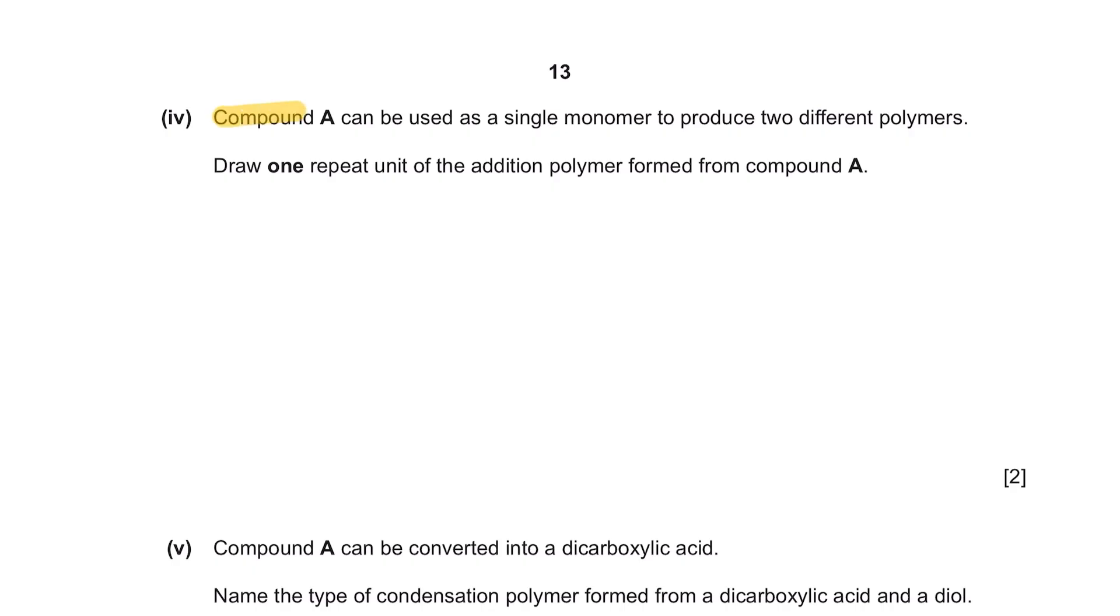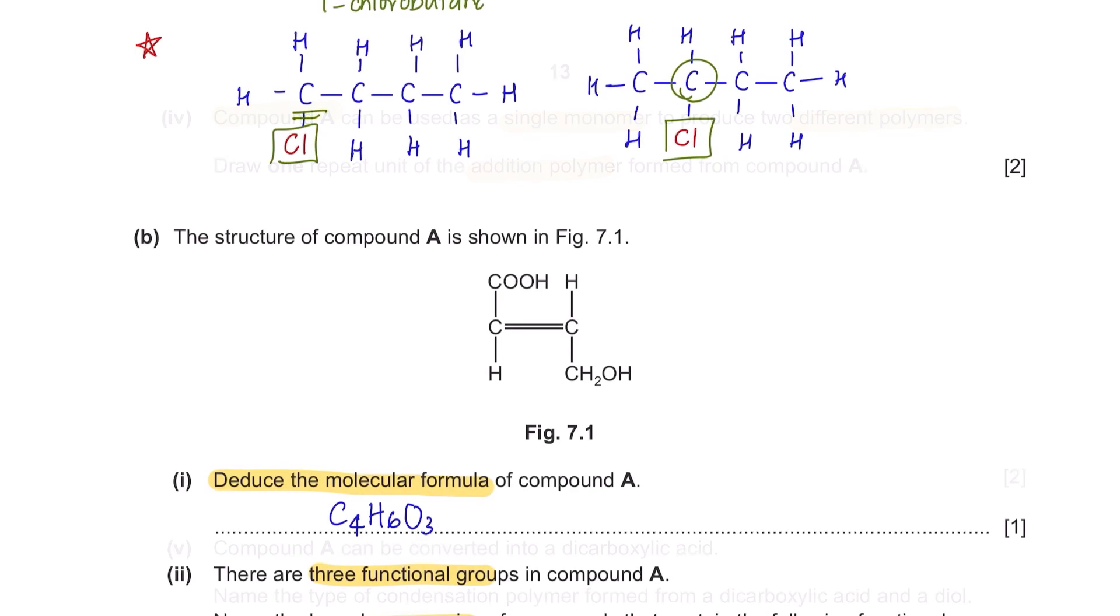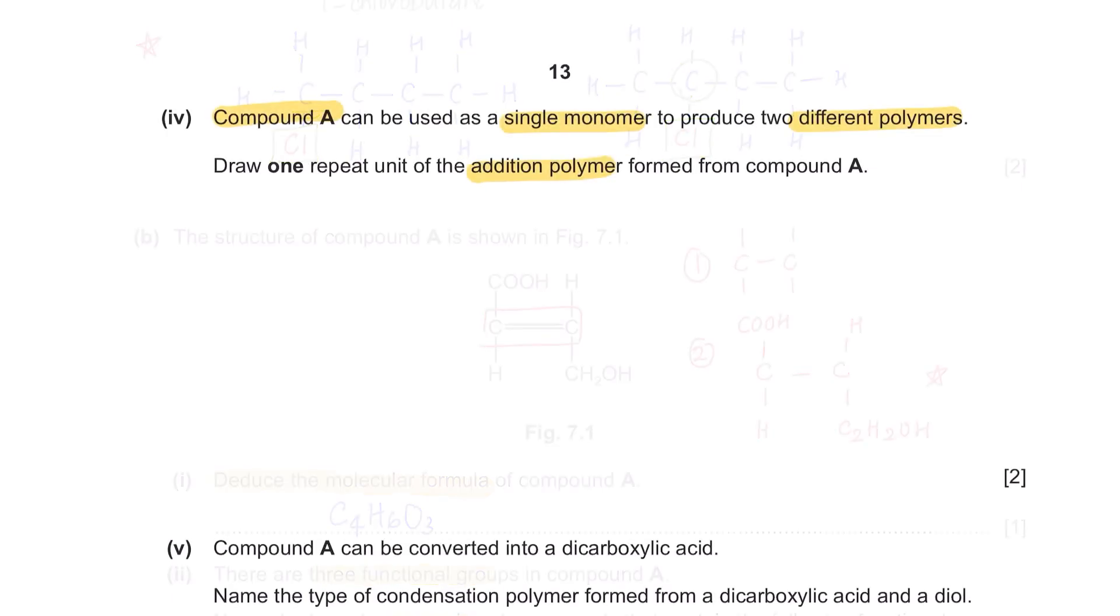Part 4. Compound A can be used as a single monomer to produce two different polymers. Draw one repeat unit of the addition polymer formed from compound A. So let's look at the structure of compound A. One repeated unit could be carbon or this. You are only asked to draw one repeat unit so you can draw either one of these.